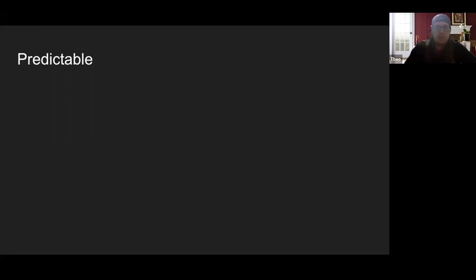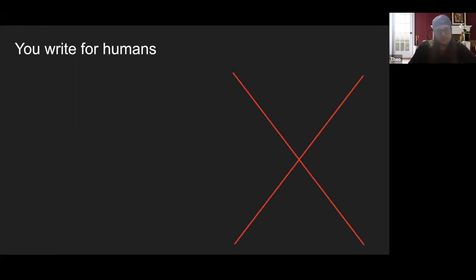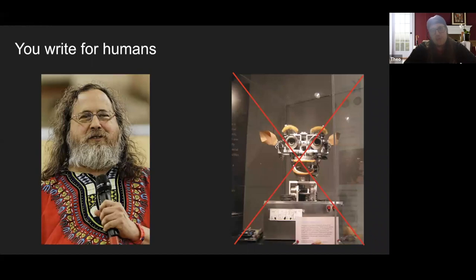Starting with predictable. Predictable code really just means that you can know the future. The reason this is important is that we write code for humans — and this is something that's easy to forget. Humans need things like spacing, indentation, and clear variable names. Machines don't need any of that.